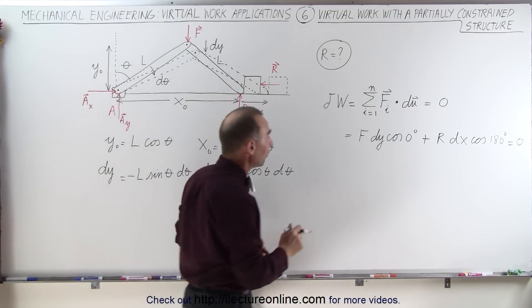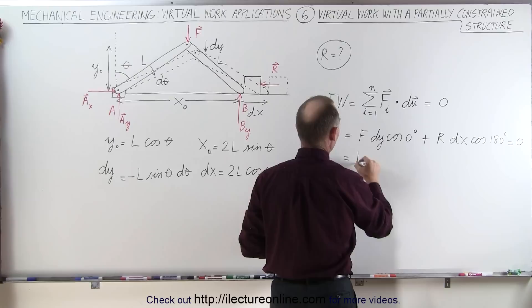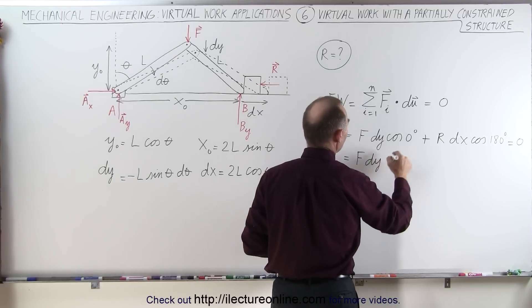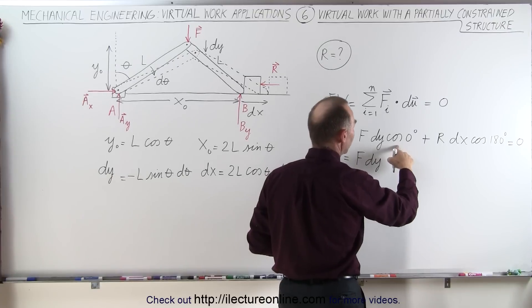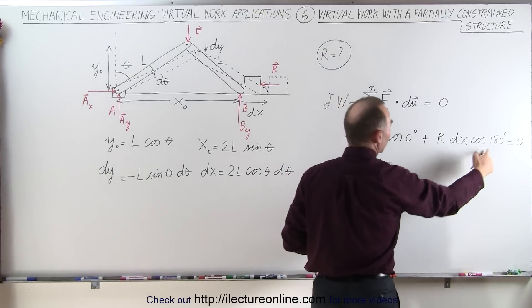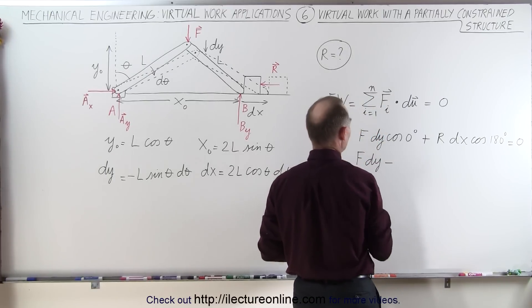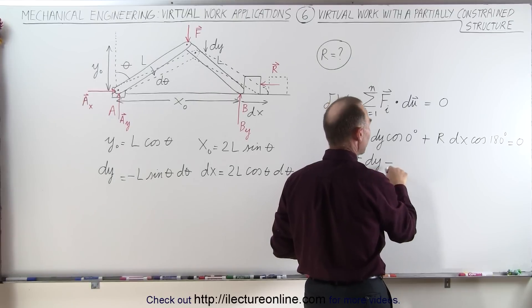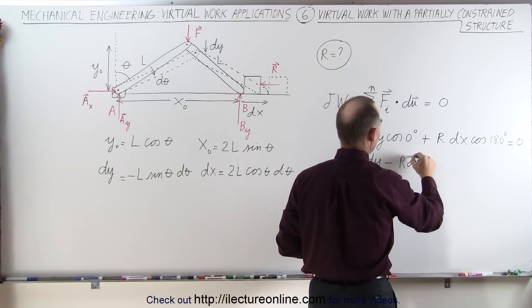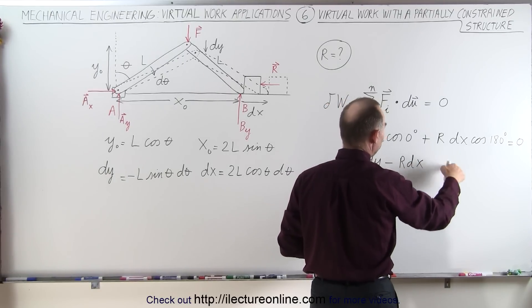Now let's go ahead and simplify this. So this is equal to F times dy, times the cosine of zero, which is one. And then minus, because the cosine of 180 degrees is minus one, so let me get rid of these equal signs here. So we have F dy minus R dx times the negative one, which I placed there,